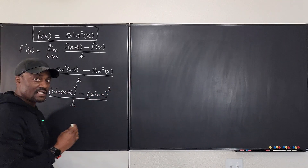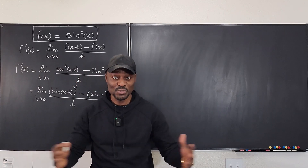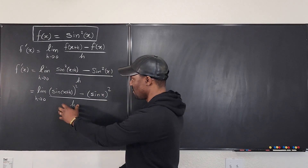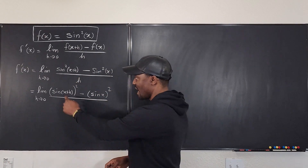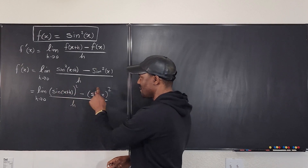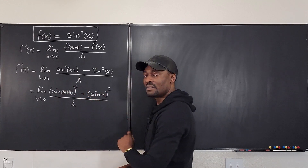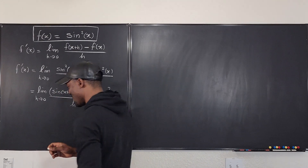Clearly this tells me I have the difference of two squares. And if you have the difference of two squares, you can rewrite it as (this minus this)(this plus this). Okay, so let's do that.